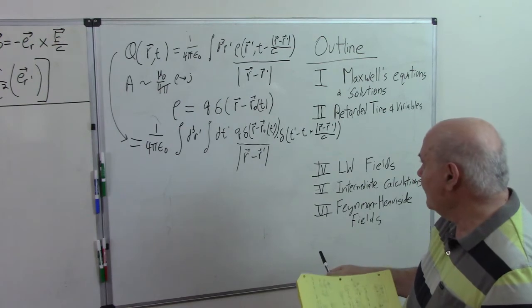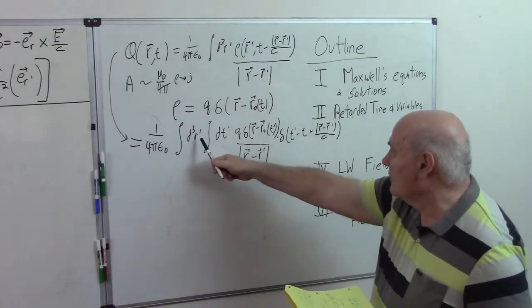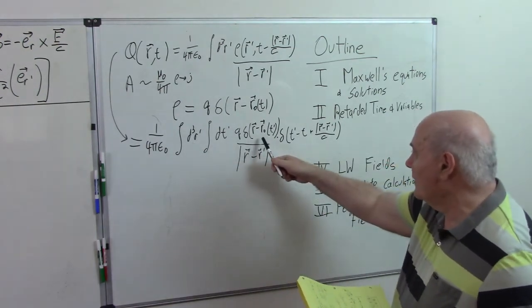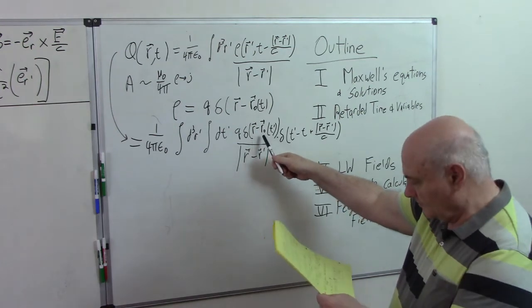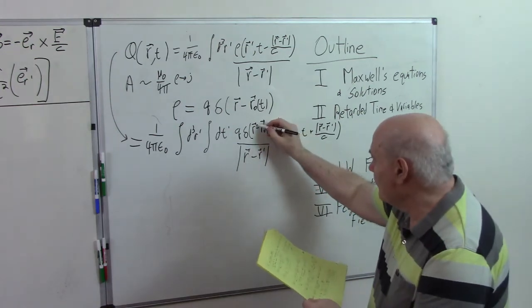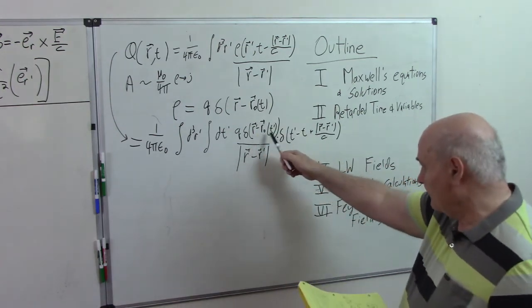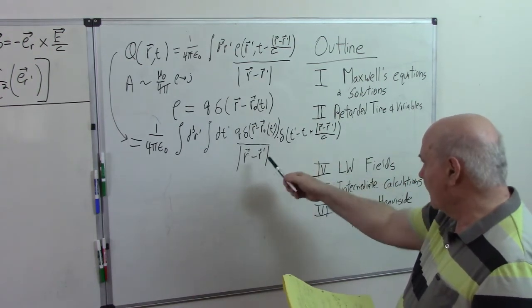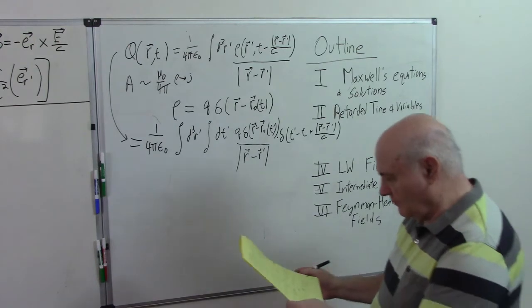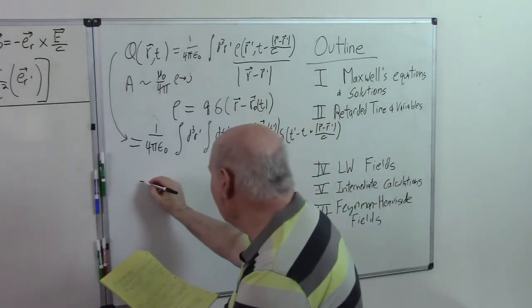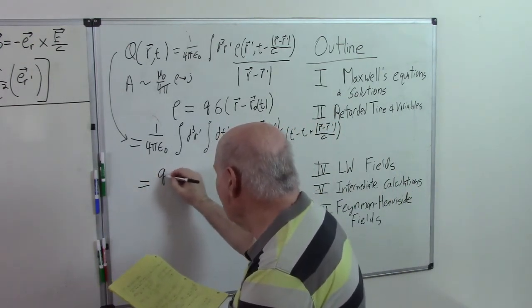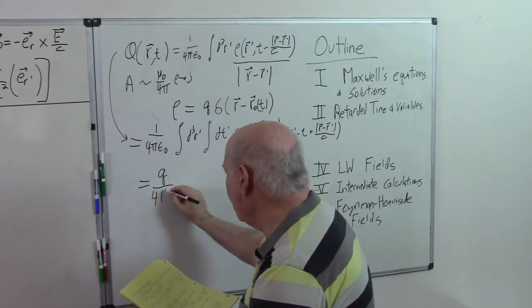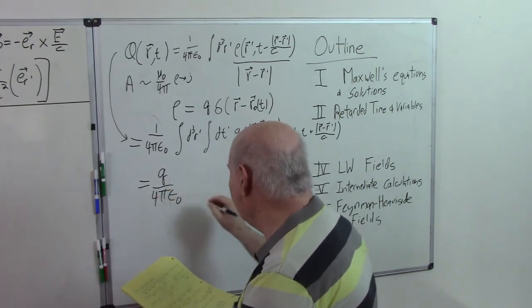So we have, again, a three-dimensional integration over all space. So we set, should be r'. So we set r' just equal to r_0 at t' everywhere else in the formula. And that will be the evaluation. So this is going to be equal to q over 4π epsilon_0.